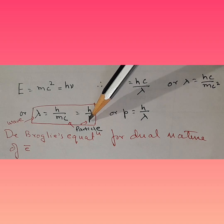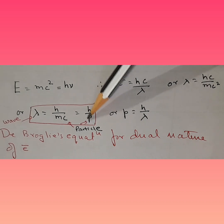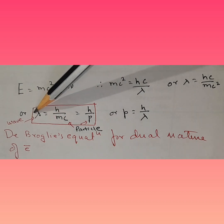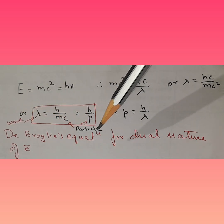So electrons having wave and particle. This p is for momentum, not for particle. But that momentum is the property of a particle. So this part is particle and this part is wave. That's about de Broglie's equation for dual nature of an electron.